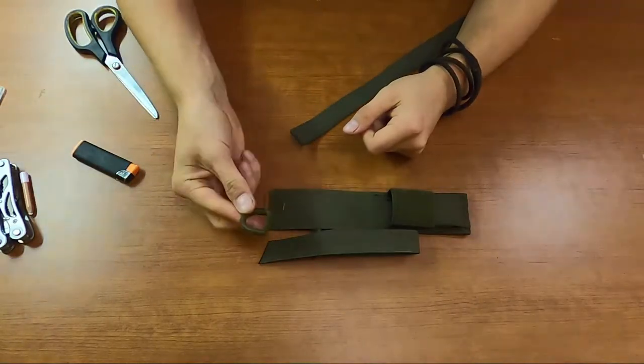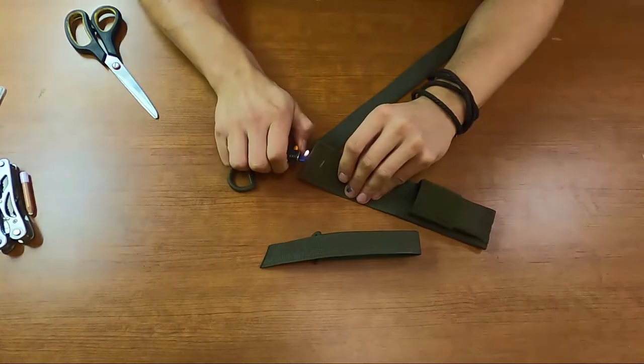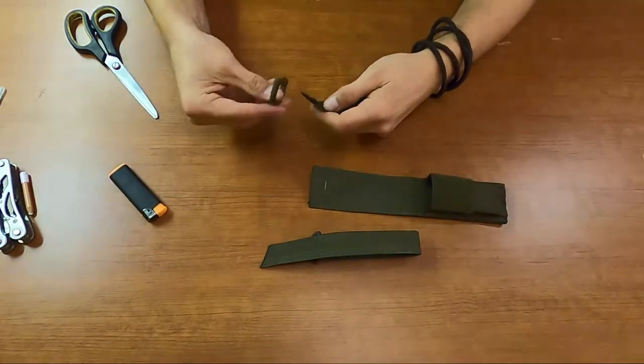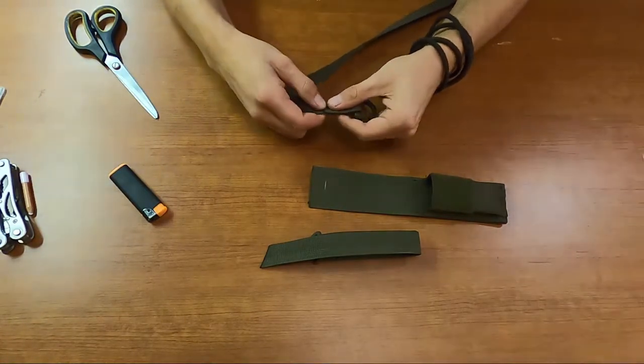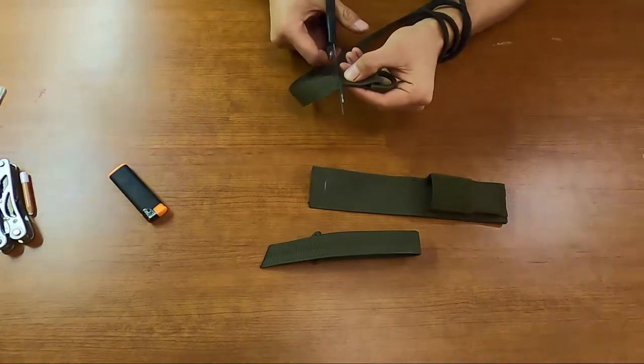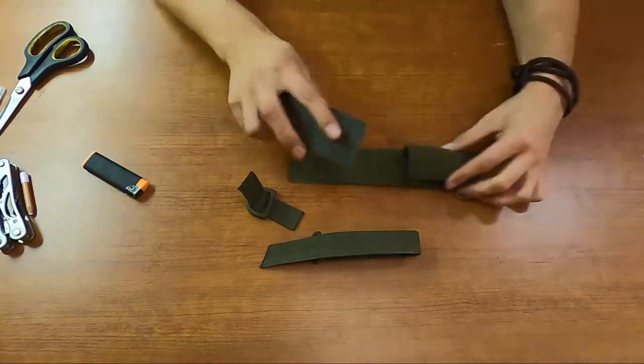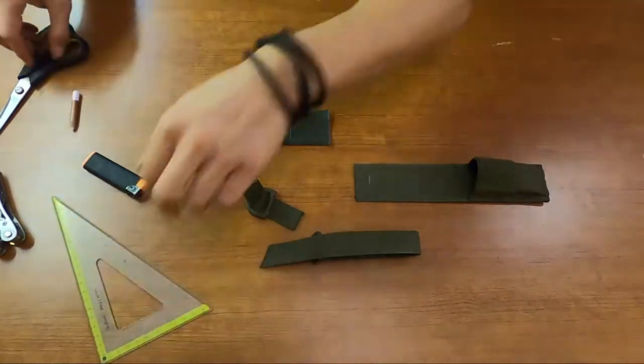To make a handle, I will use 25mm D-ring and a piece of strap to attach it into my flap. We need to remember about the hook part of Velcro. I will use 5x5cm piece of it.